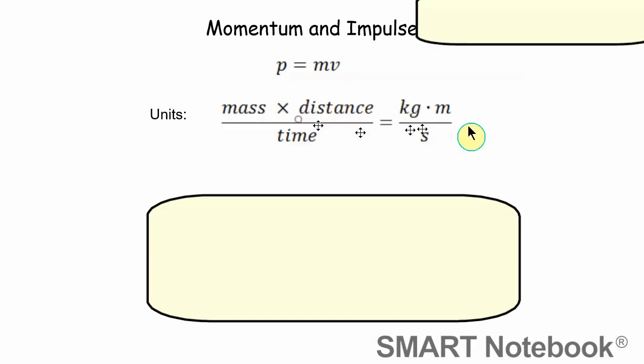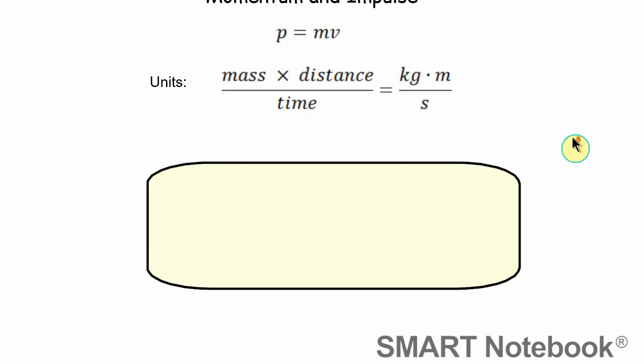The units of momentum, since we have mass times velocity, it's going to be a mass unit times a velocity unit. Velocity is distance divided by time, so in the kilogram-meter-second system, that would be kilogram meters per second.